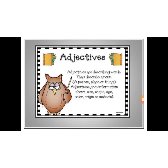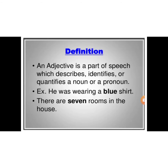Adjectives are describing words. They describe a noun. What are nouns? A person, place or a thing. They give us information about size, shape, age, color and origin or material of a noun. An adjective is a part of speech which describes, identifies or quantifies a noun or a pronoun.